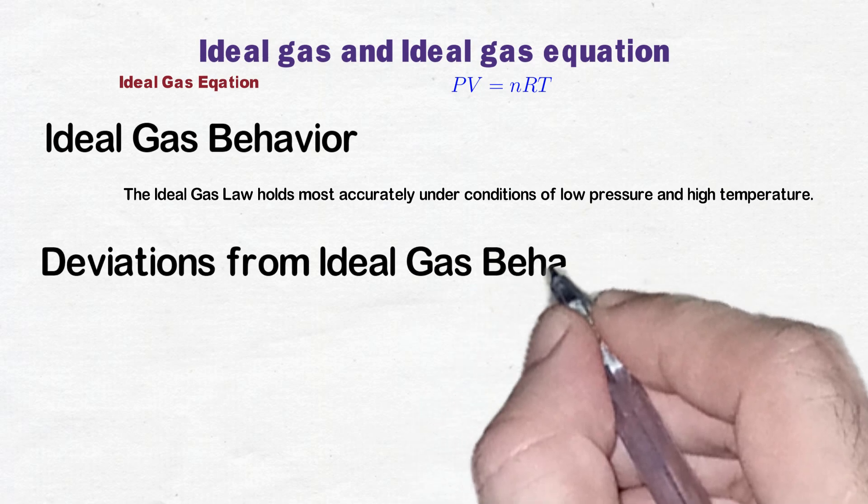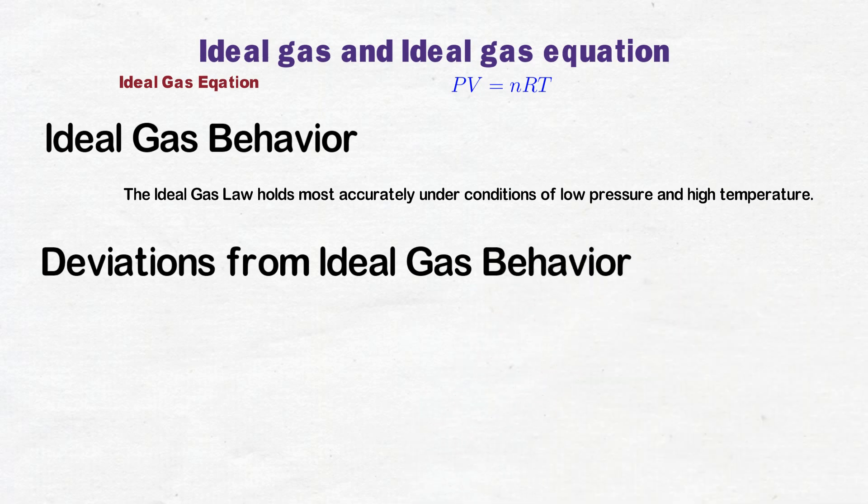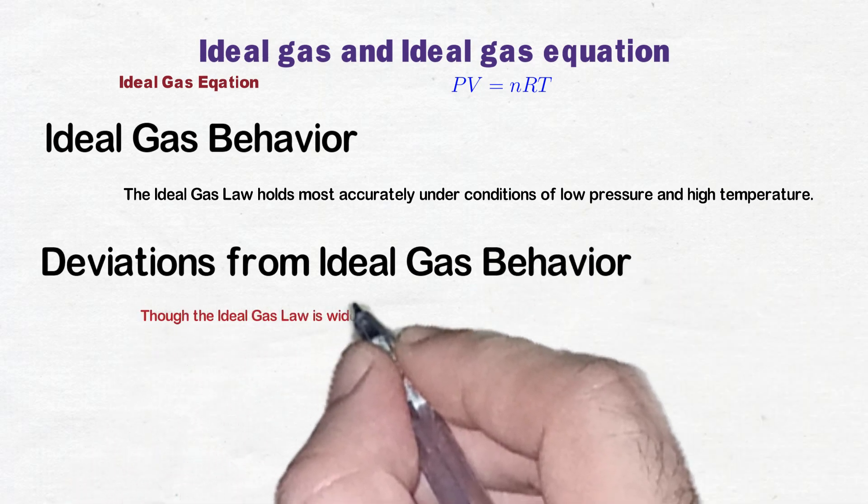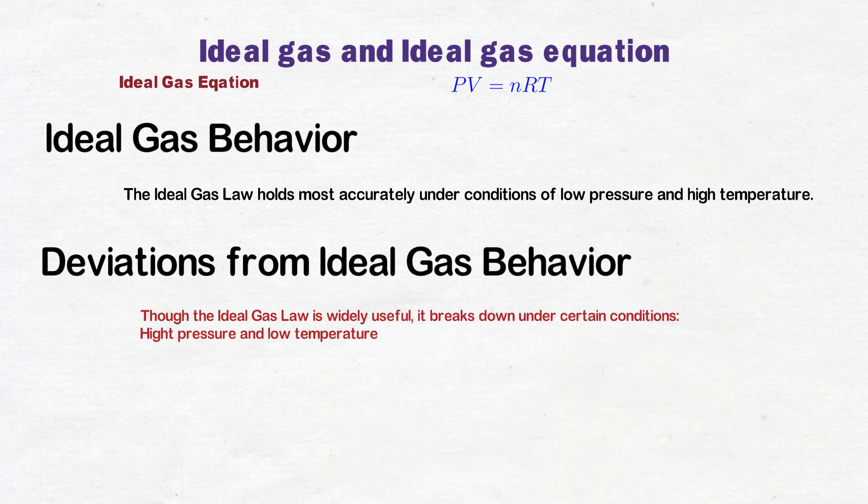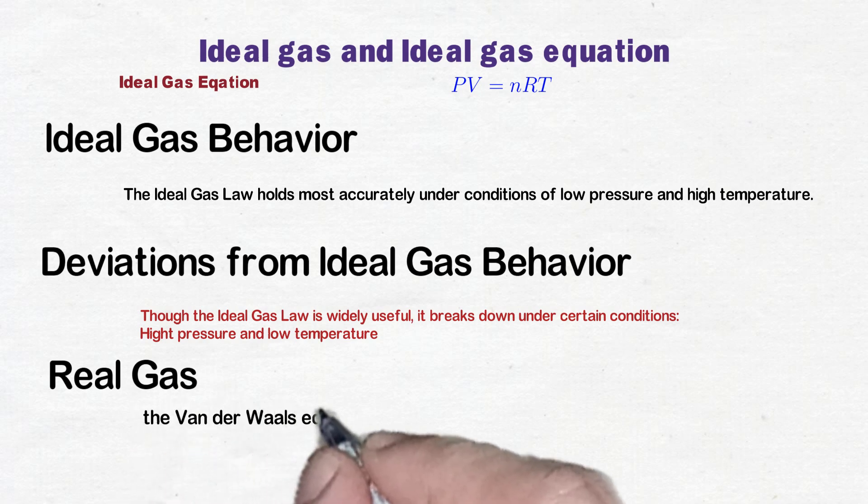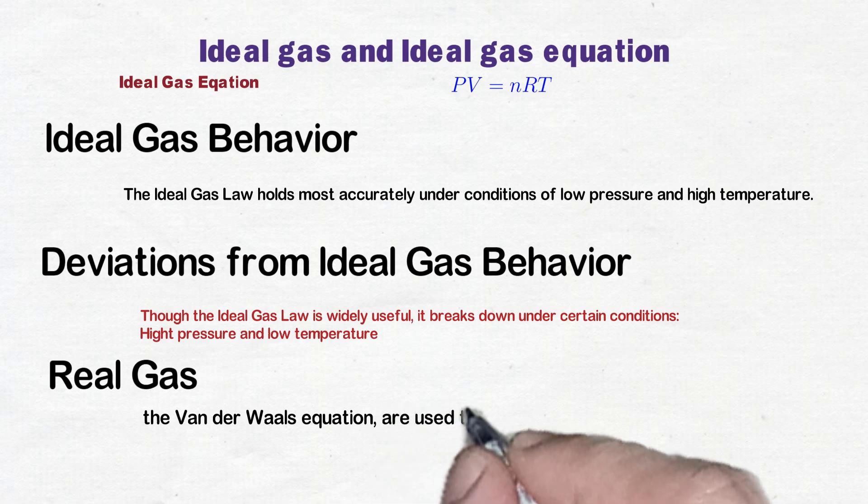The ideal gas behavior breaks down under certain conditions. At high pressure, when the gas molecules are compressed, their finite volume becomes significant and they no longer behave as point particles. While at low temperature, gas molecules move more slowly and intermolecular attraction van der Waals forces become important. This can lead to condensation where the gas transitions to a liquid, which the ideal gas law does not account for.